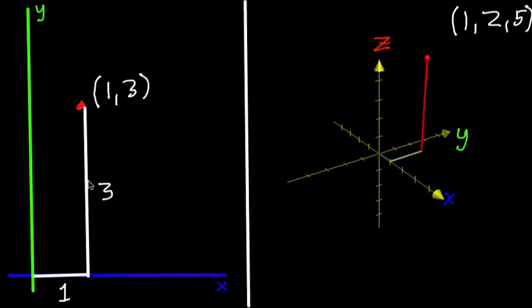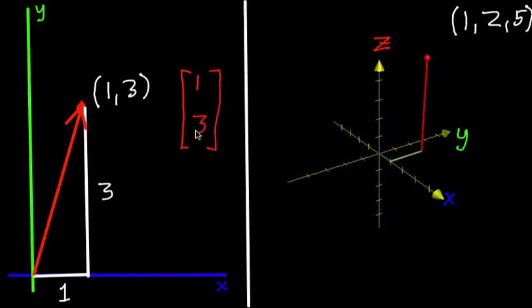So vectors we typically represent as some kind of arrow. Let's give this arrow a nice color. And if it's a vector from the origin to a simple point, the coordinates of that vector are just the same as those of the point. And the convention is to write those coordinates in a column. It's not set in stone, but typically, if you see numbers in a column, you should be thinking about it as a vector, some kind of arrow.